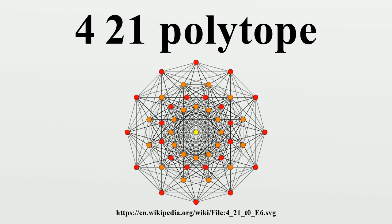The vertex figure of a single-ring polytope is obtained by removing the ringed node and ringing its neighbor, making the 321 polytope. These graphs represent orthographic projections in the E8, E7, E6, B8, D8, D7, D6, D5, D4, D3, A7, and A5 Coxeter planes. The vertex colors are by overlapping multiplicity in the projection, colored by increasing order of multiplicities as red, orange, yellow, green.